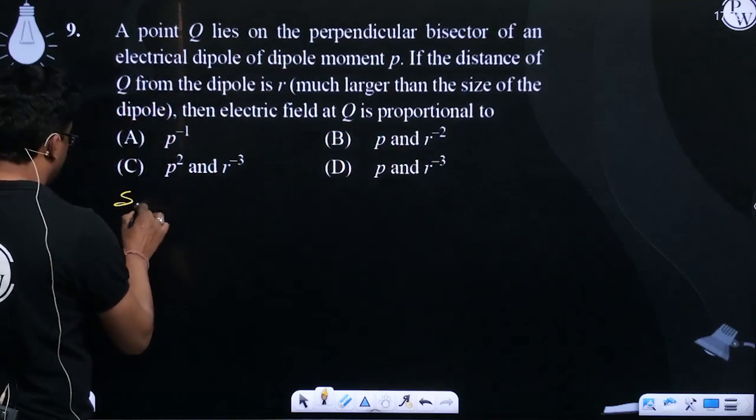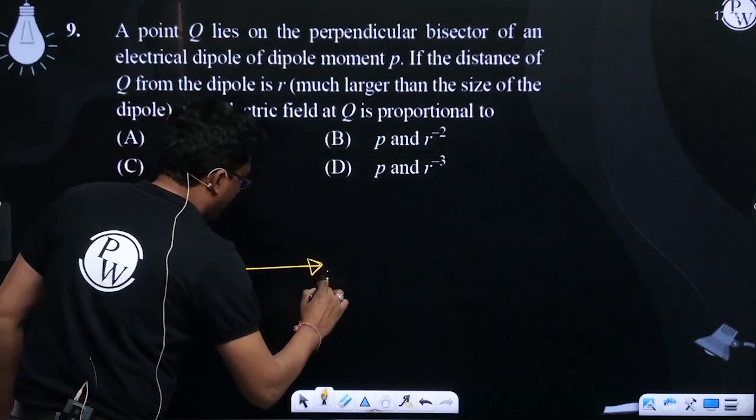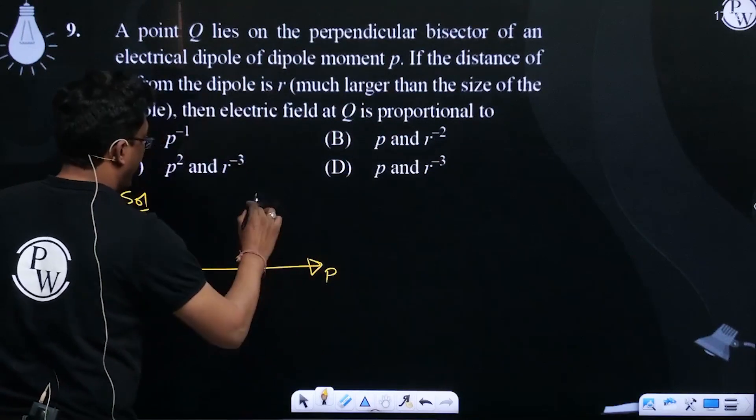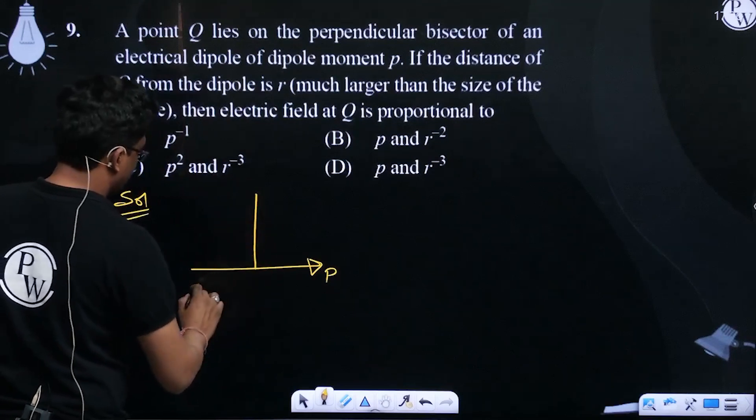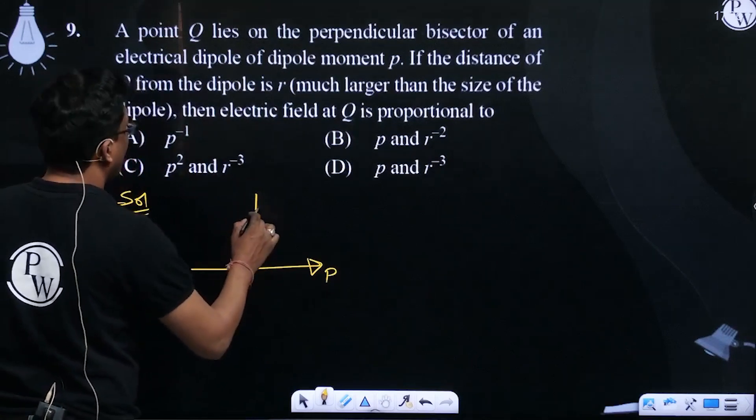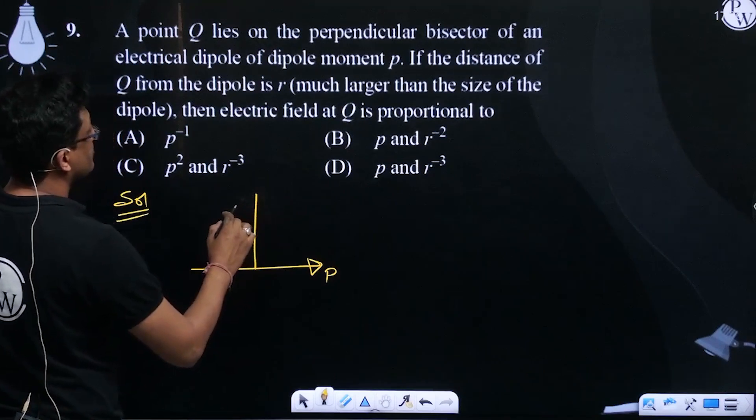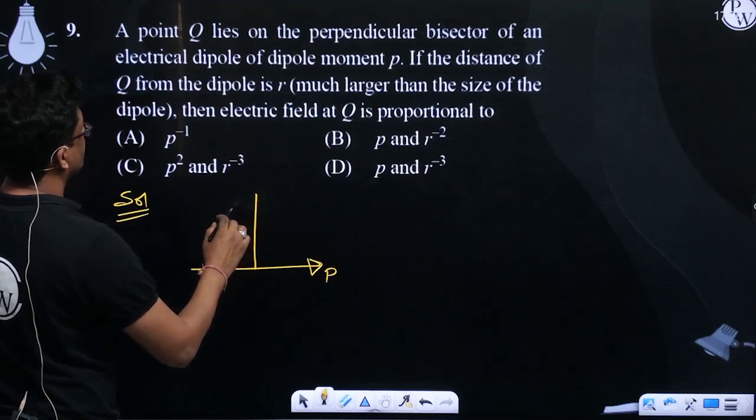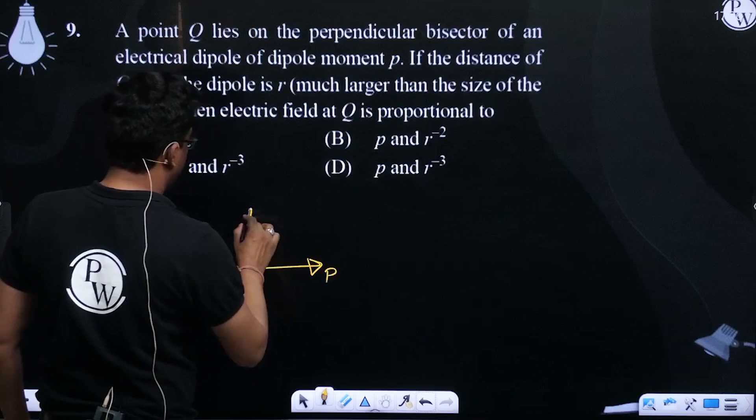So this is your P and here is R. The dipole terminals are in the middle of this. This is the distance R, which is much larger.